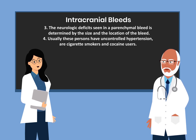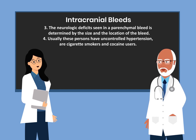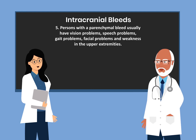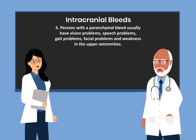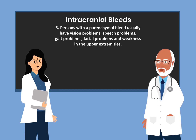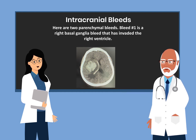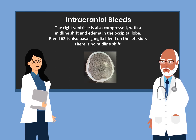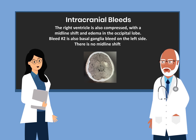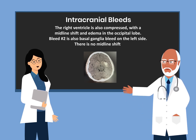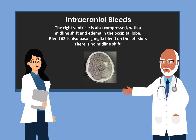Usually these persons have uncontrolled hypertension, are cigarette smokers, and cocaine users. Persons with a parenchymal bleed usually have vision problems, speech problems, gait problems, facial problems, and weakness in the upper extremities. Here you have two parenchymal bleeds. Bleed number one is a right basal ganglia bleed that has invaded the right ventricle. The right ventricle is also compressed with a midline shift and edema in the occipital lobe. Bleed number two is also a basal ganglia bleed on the left side — in this case there is no midline shift.